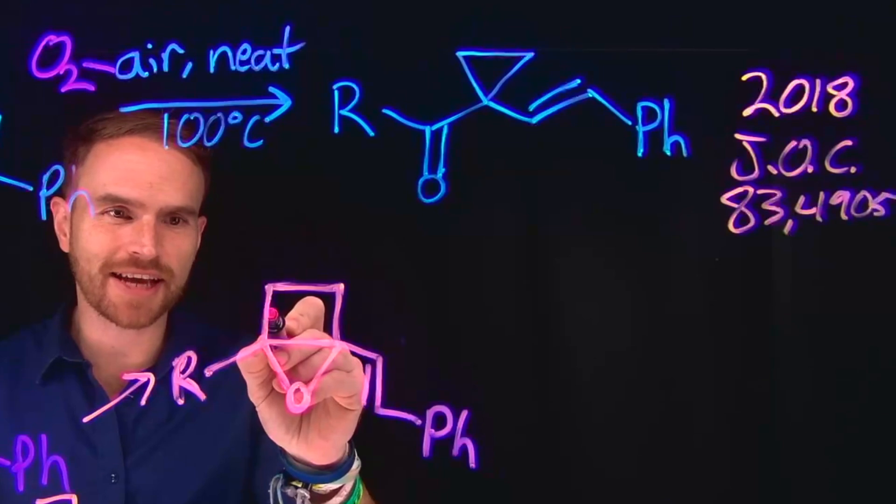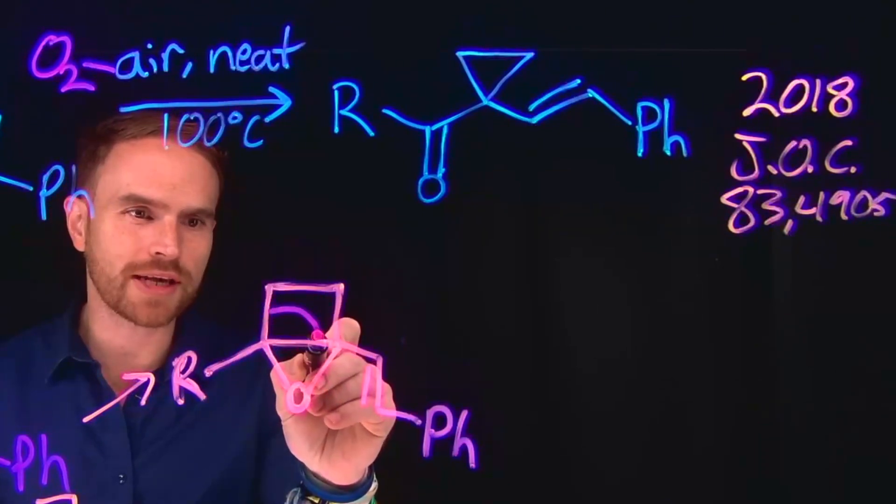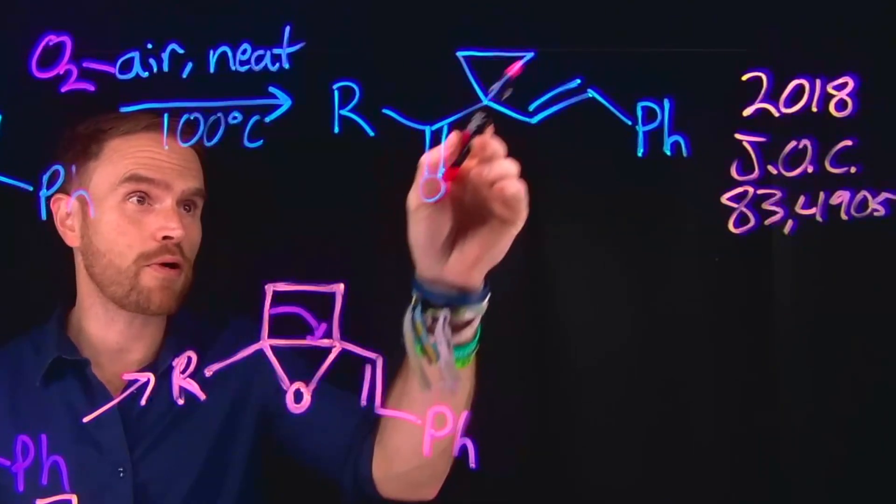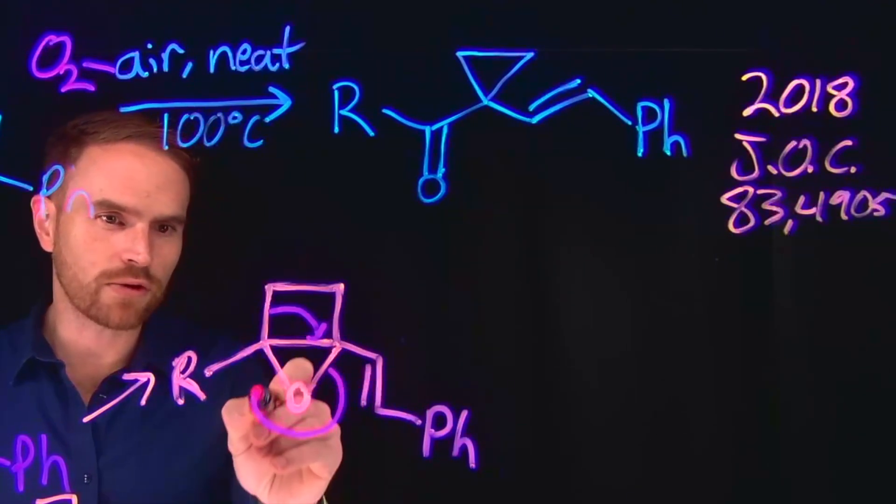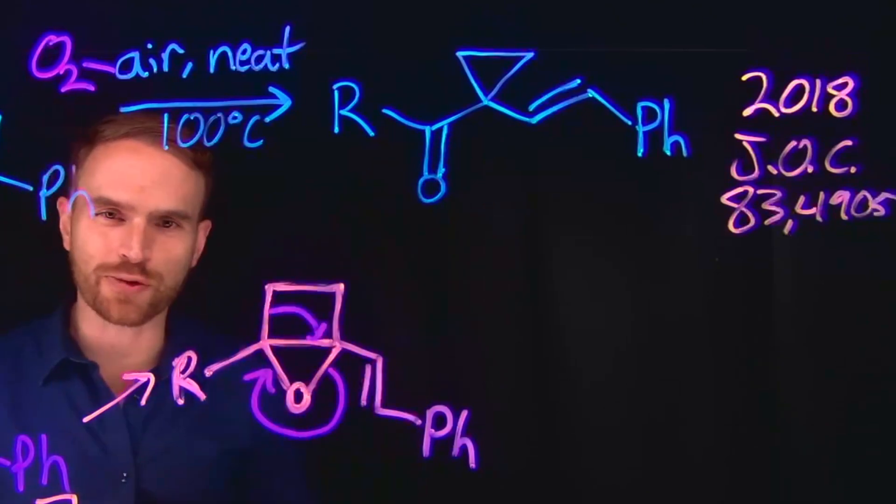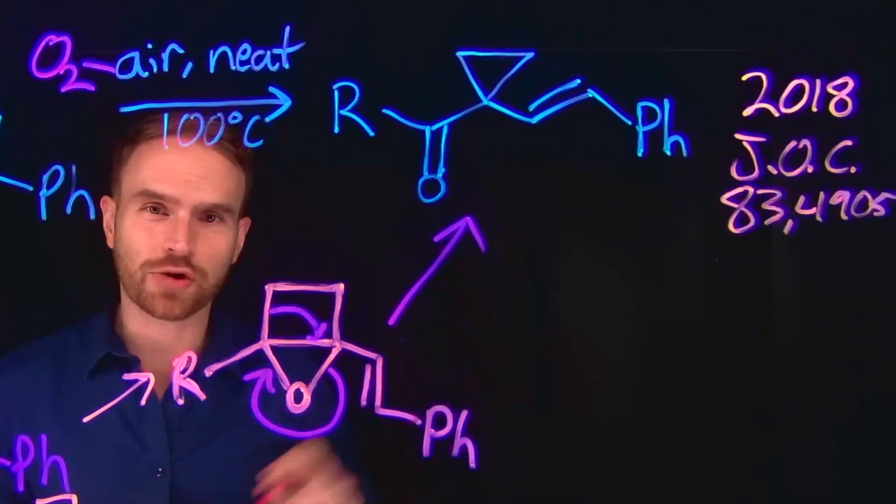So what's going to happen is these electrons are going to go over here to form our cyclopropane ring. And these electrons will now be liberated to come over to this side, which is how we get our carbonyl functional group. And that's the final product of this transformation.